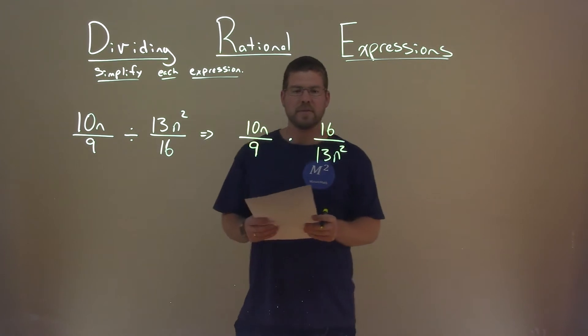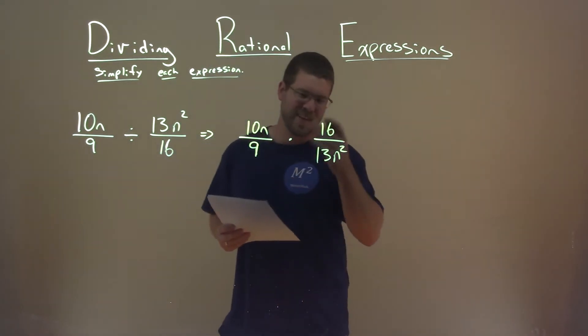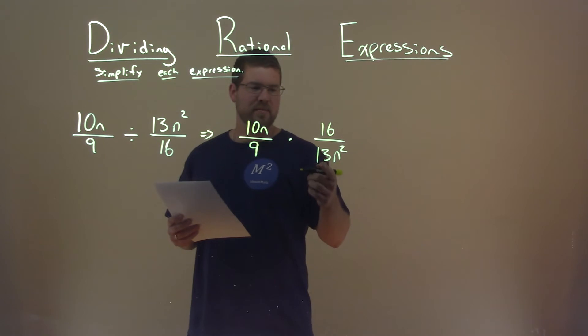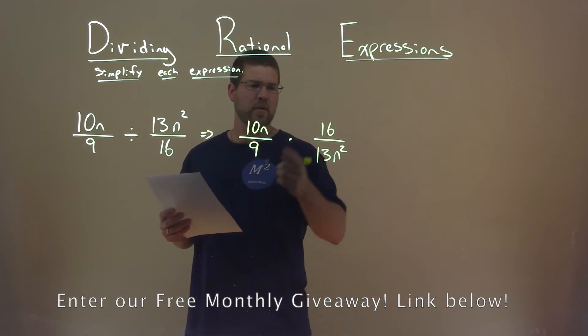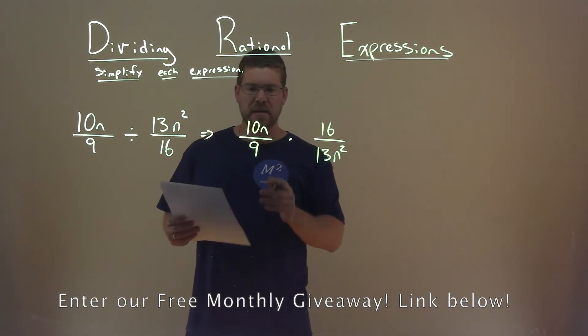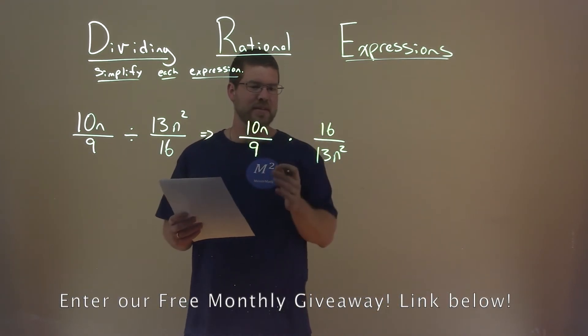Now, what we want to do is see if there's anything that we can cancel each other out. Well, 13 doesn't really have any divisors, that's prime. And 9 is just 3, and 3 doesn't go into 10 or 16. So there's no way, actually, that we can quickly simplify this.